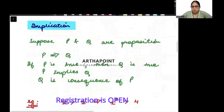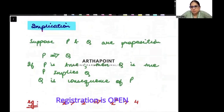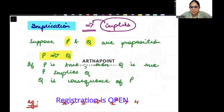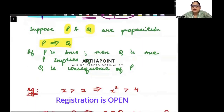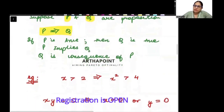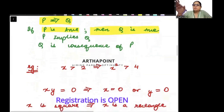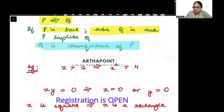Now try to understand implication. Suppose I take two propositions, P and Q. When I say P implies Q — this sign means implies — it means that whenever P is true, then Q will also be true. Q is a consequence of P. For example: if x is greater than 2, then x squared will always be greater than 4. When this is true, that will be true.